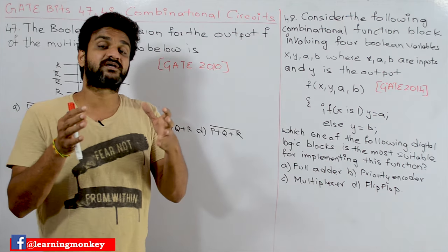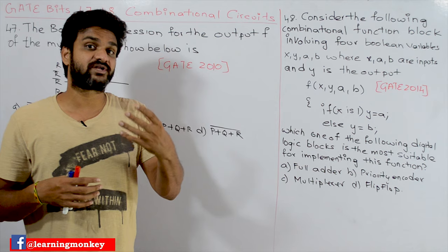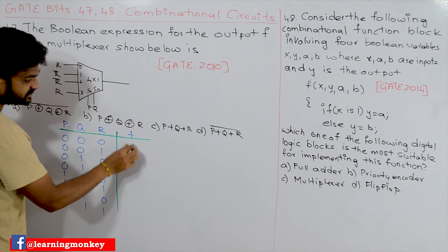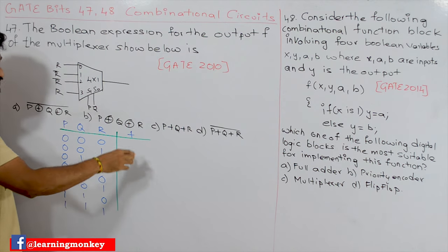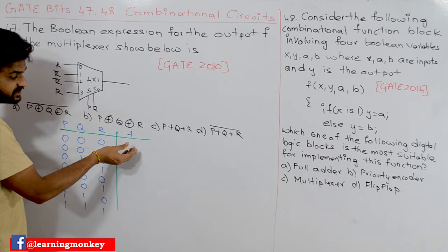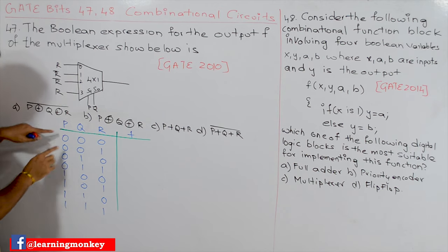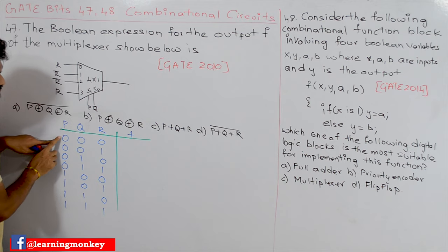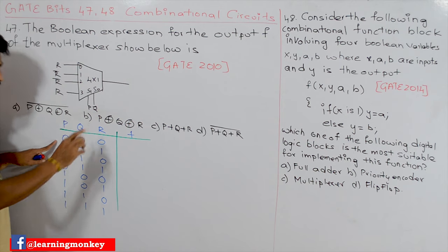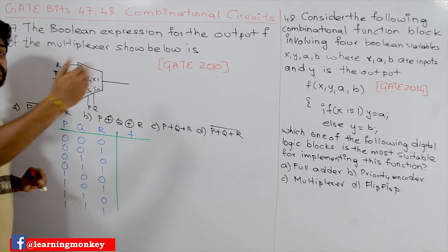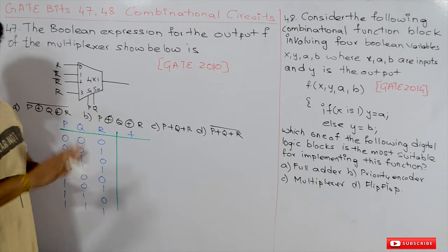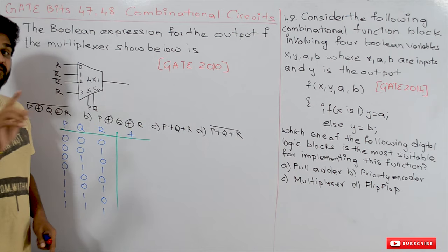These concepts have been discussed in our previous videos. There we said that whenever you want to construct a function using a smaller multiplexer, the function will be given and we have to consider this function with respect to R. For example, for inputs of 0,0 — how the function is behaving with respect to R — based upon that we evaluate R and take it as the input of the multiplexer. If you haven't watched that video, please watch it.